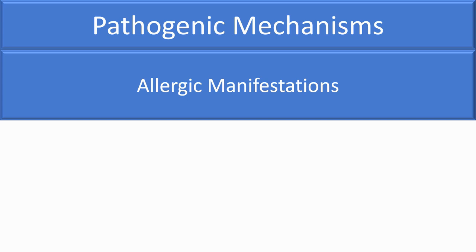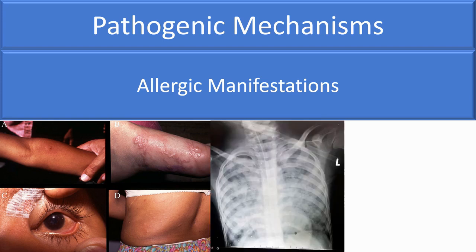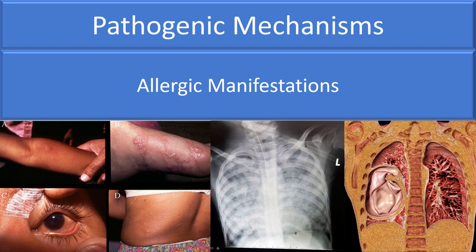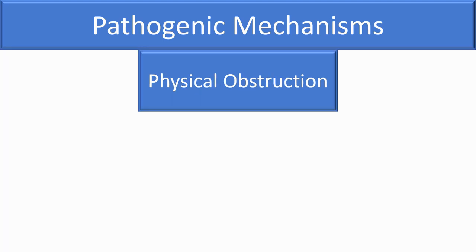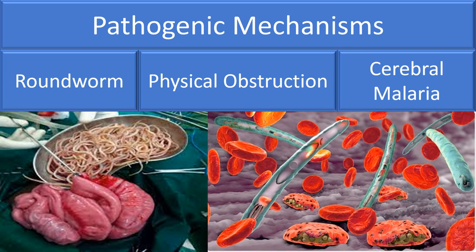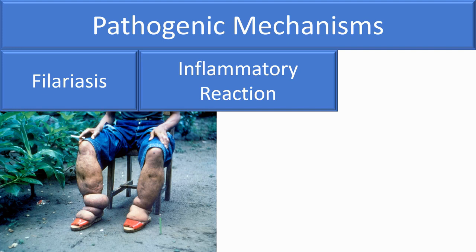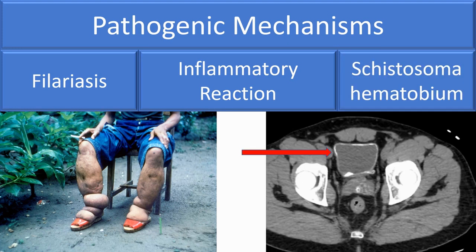Allergic manifestation is another mechanism, where clinical illness is caused by the host immune response — for example, skin and eye involvement in parasitic infections, eosinophilic pneumonia in ascaris infection, and anaphylactic shock from rupture of a hydatid cyst. Parasites can also cause physical obstruction — masses of roundworm can cause intestinal obstruction, and Plasmodium falciparum malaria can produce blockage of brain capillaries in cerebral malaria. Inflammatory reaction is another mechanism — clinical illness caused by inflammatory changes and fibrosis, such as lymphadenitis in filariasis and urinary bladder granuloma in Schistosoma haematobium infection.